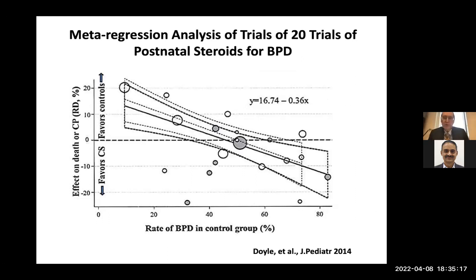A conceptually important slide from Lex Doyle: a meta-regression where the size of the circle represents study size, looking at effect on death or cerebral palsy based on the BPD rate in the control group. If you have a BPD rate of about 50 percent and use steroids, you'll have better outcomes in terms of death and CP. If you have a really low incidence of BPD, it's more likely to be toxic. If you have a high incidence of BPD, it's also more likely to be toxic.